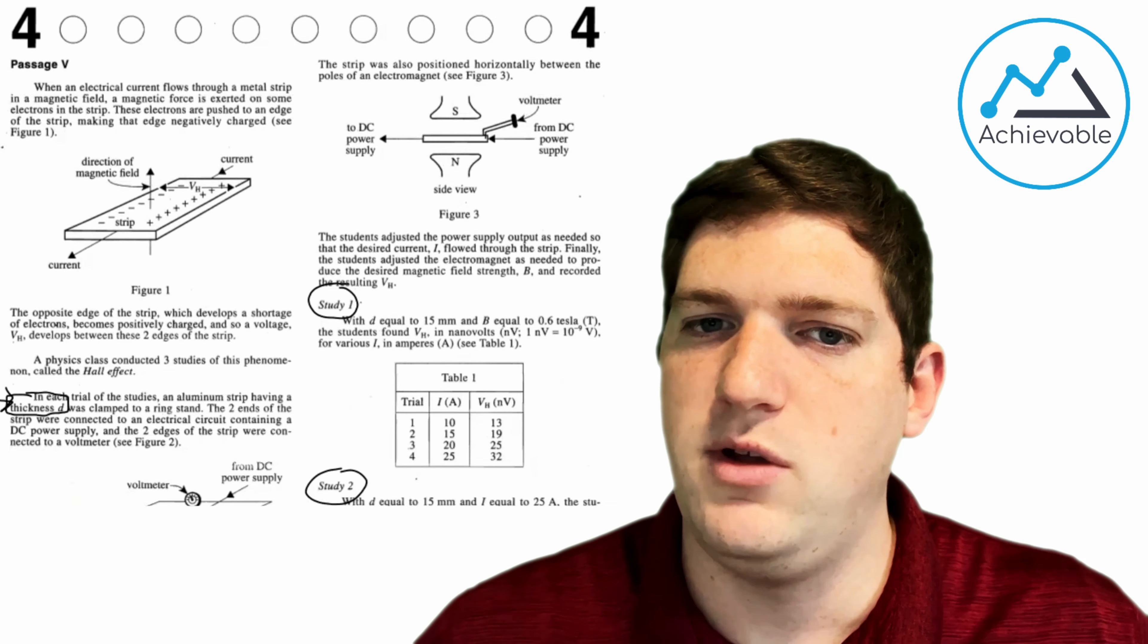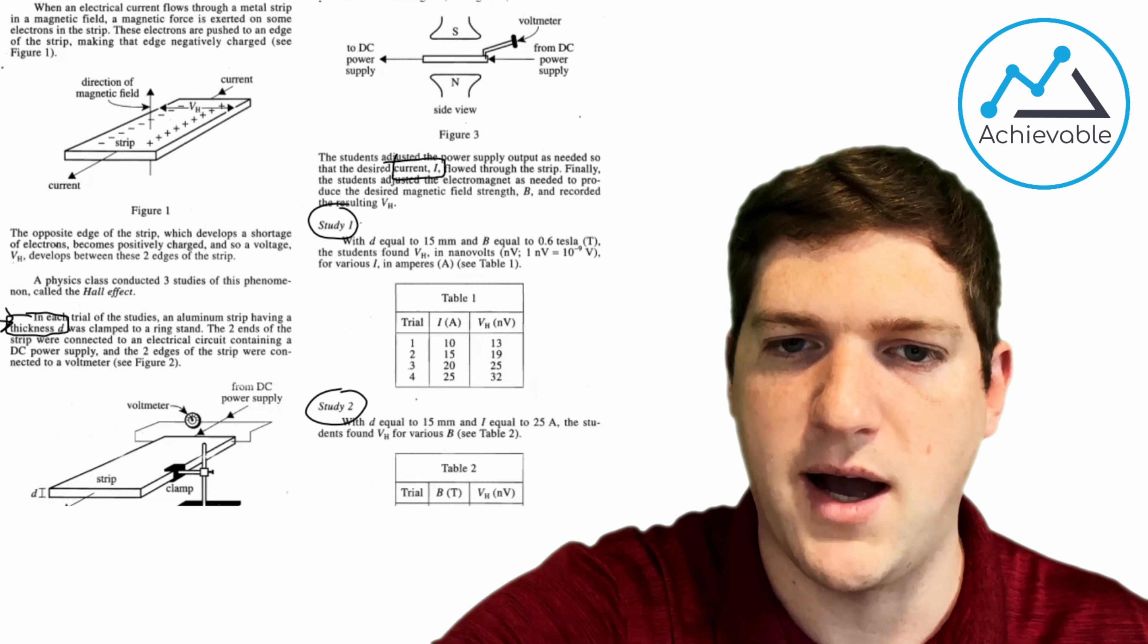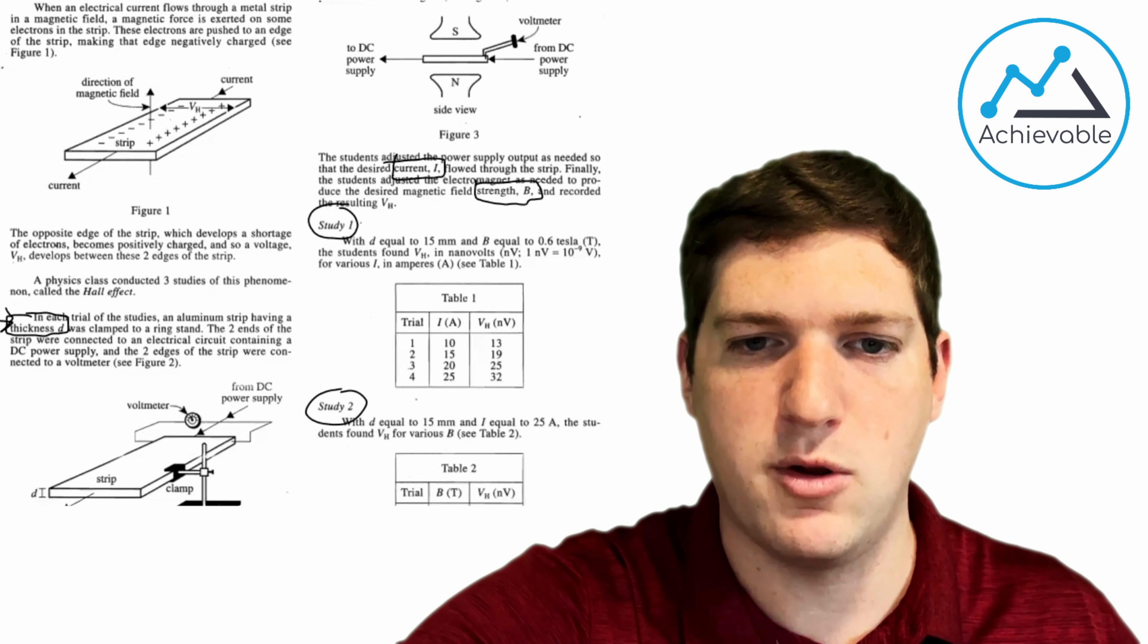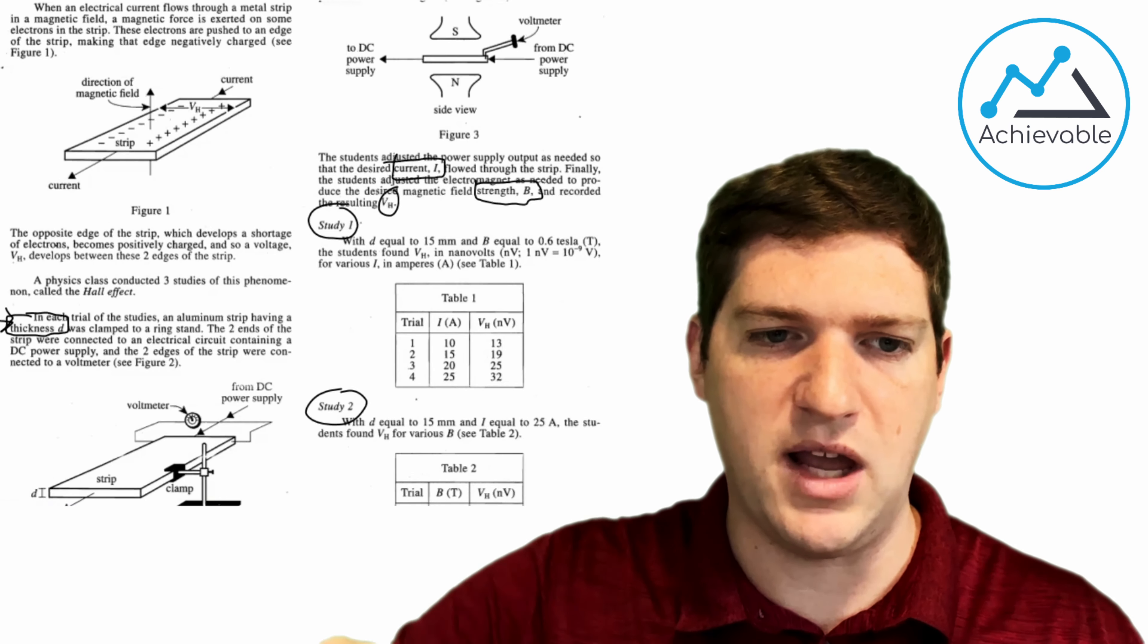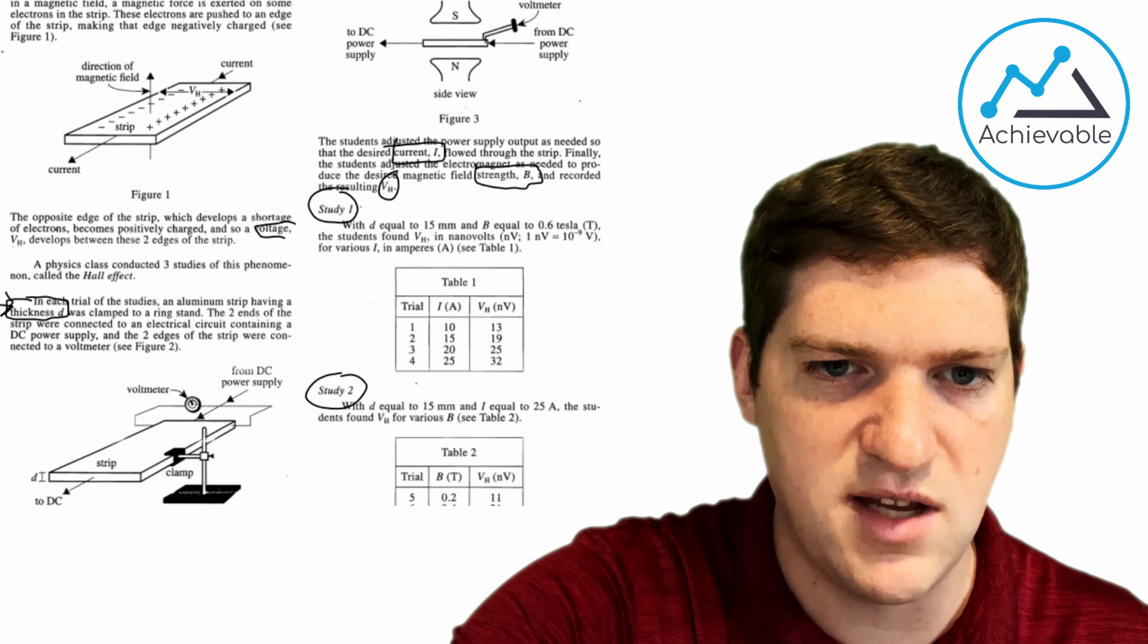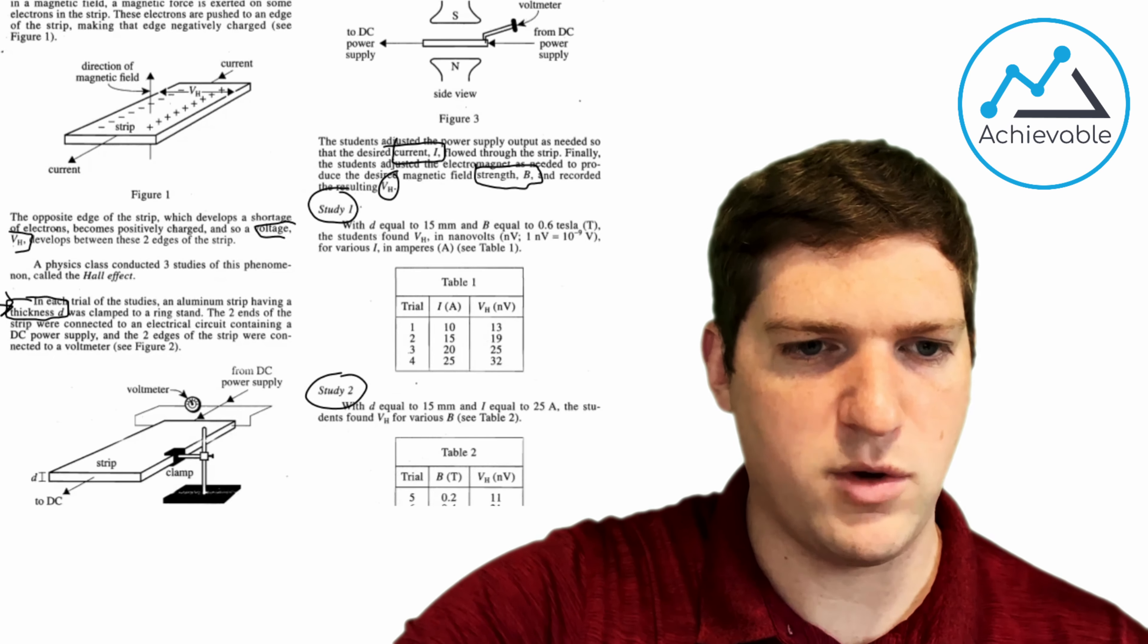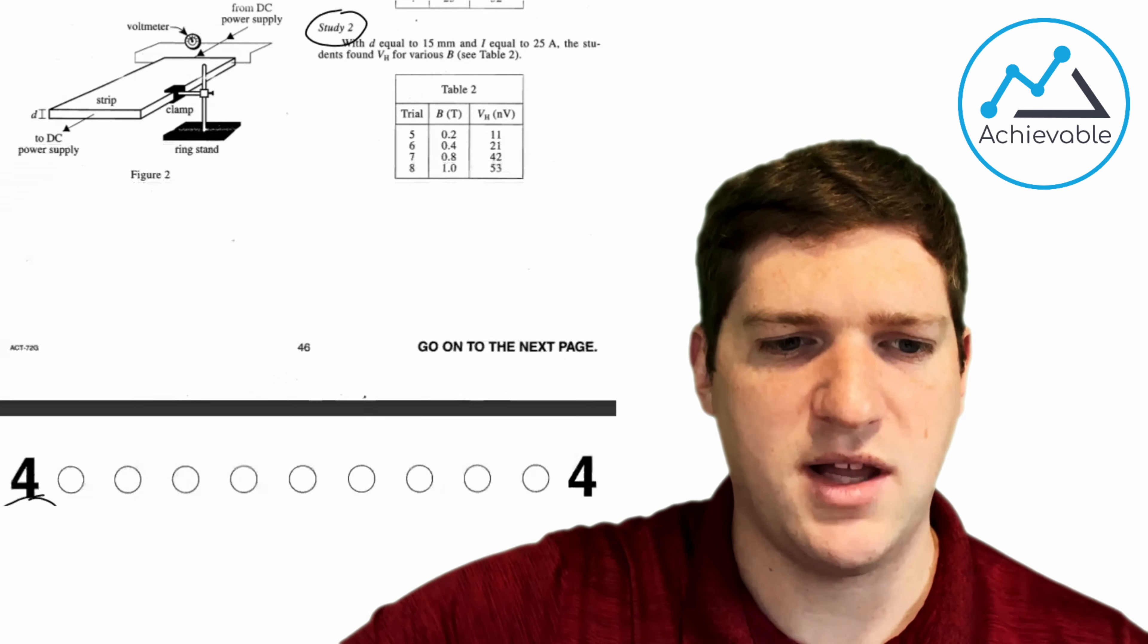The strip was also positioned horizontally between the poles and electromagnet. The students adjusted the power supply output as needed to the desired current I. Current I. Great. Flow through the strip. Finally, the students adjusted the electromagnet as needed to produce the magnetic field strength B. So I'm going to box those and recorded the resulting VH. I don't know what VH is, but I can tell it's important. It's what they're looking for. They're changing I and changing B and looking for VH. So I'm going to go back and let's see if we can find it here. I do see a little VH. It's right here. VH stands for voltage. Now, I don't understand everything there is to know about the experiment, but I can go back and figure that out if I need to, if the question prompts me to. But I can tell that we're studying D, I, B to find VH. That's all that I've picked up on so far. So let's do another couple of questions here.